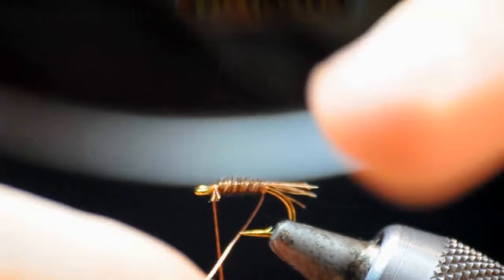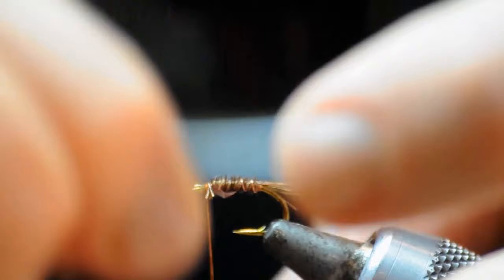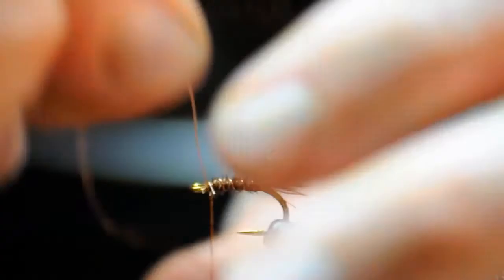And now I'll rib the fly with the copper wire. I'm going the opposite direction that I wrapped the pheasant tail. It makes a sturdier fly.